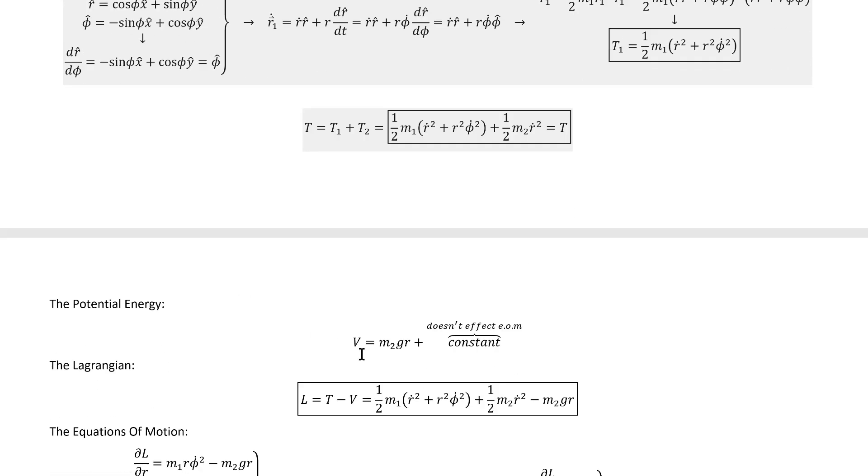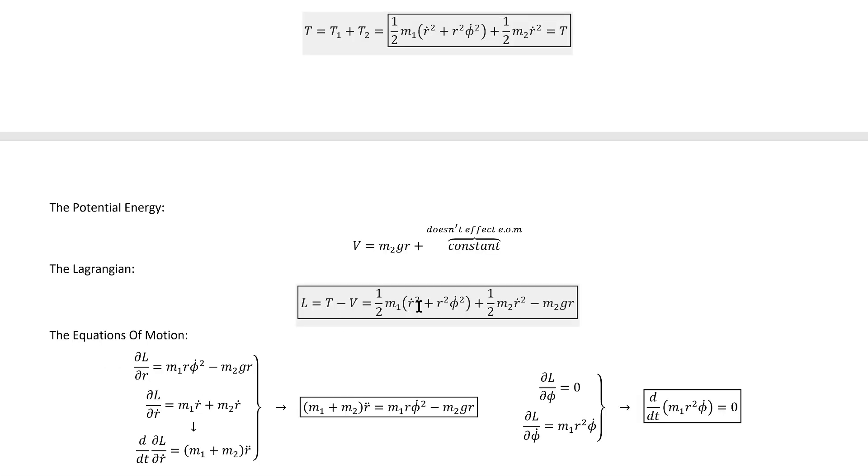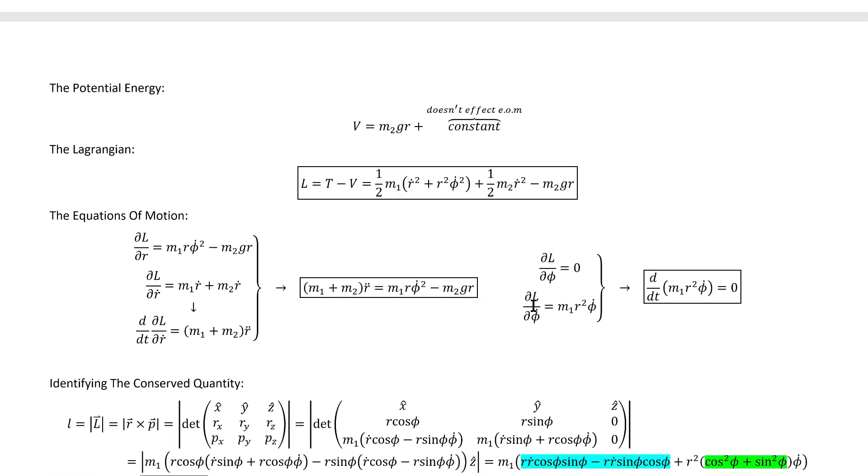Next, we need the potential energy, which is quite easy. It's just the gravitational potential of the hanging mass, where, of course, we can ignore the constant part because it doesn't affect the equations of motion. And we have all we need to write out our Lagrangian, which is just T minus V, and we can now calculate the equations of motion.